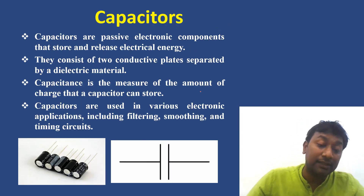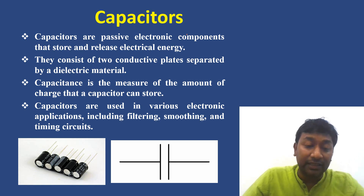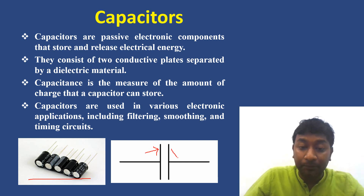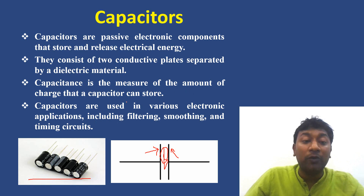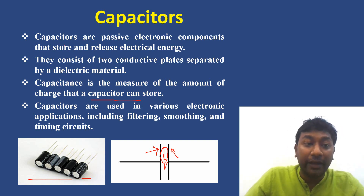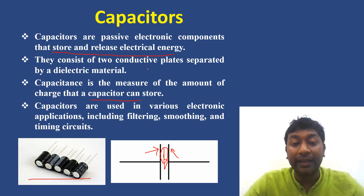Apart from resistance, the other two commonly used passive components are capacitors and inductors. Capacitors are passive electronic components that store and release electrical energy. They consist of two conducting plates separated by a dielectric material. Capacitance is the measure of the amount of charge that a capacitor can store. Capacitors are used in various electronic applications including filtering, smoothing, and timing.